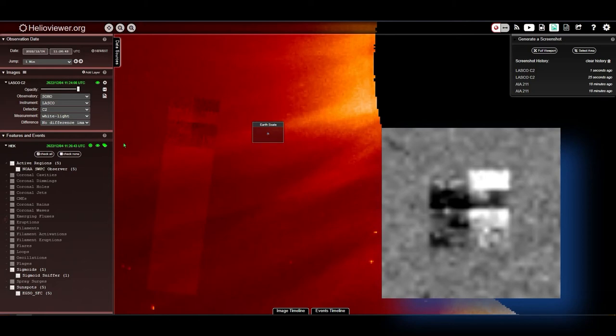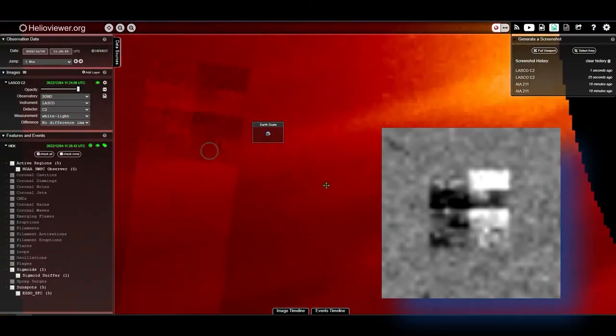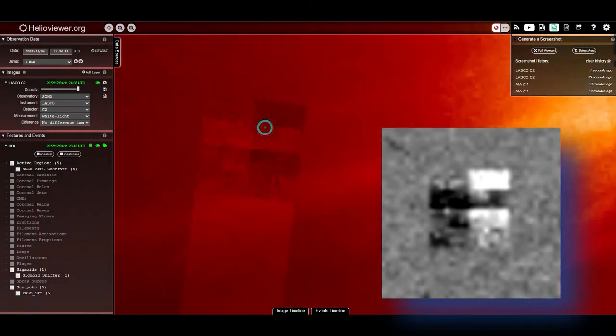Now, let's get in real close here. So you can see that this object could possibly be much, much larger than the Earth. Now, one thing that's hard to tell on these sites is depth. So we don't know if this is in front of the sun, behind the sun, so it's hard to determine whether or not we can compare it to the Earth scale here, but it just gives you a basic idea. But again, look at how you can see through this beam or trail, and you can see what's behind it, which means it's almost like a blur, and leads me to believe that this object was moving at the time it was captured.